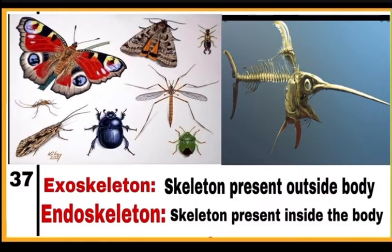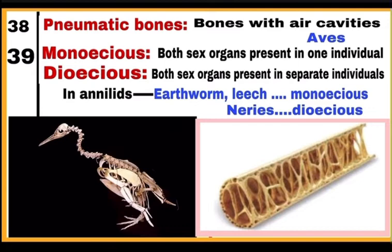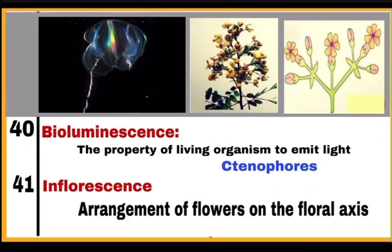Exoskeleton: the skeleton present outside the body of an organism, as in cockroach and other insects. Endoskeleton: the skeleton present inside the body forming the framework of the body. Pneumatic bones: bones with air cavities present in birds, making the body light — an adaptation for flight. Monoecious: organisms where both sex organs are present in one individual. Dioecious: organisms where sex organs are present in separate individuals. In Annelida, earthworms and leeches are monoecious while Nereis is dioecious. Bioluminescence: the property of a living organism to emit light, seen in ctenophores.